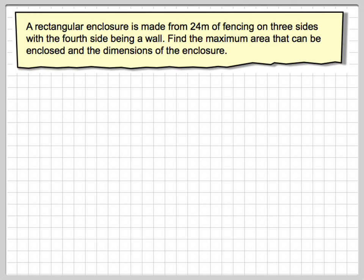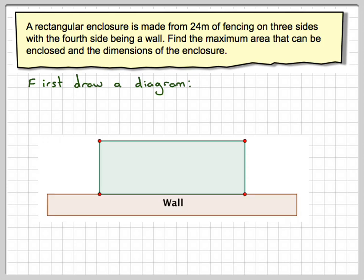Like all things in problem solving, the first thing you really should do is try to draw a diagram of the situation. So here's my diagram, so this is my wall, this is my fencing. It's only on three sides, I don't need the fencing on the side because the wall acts as a fence.